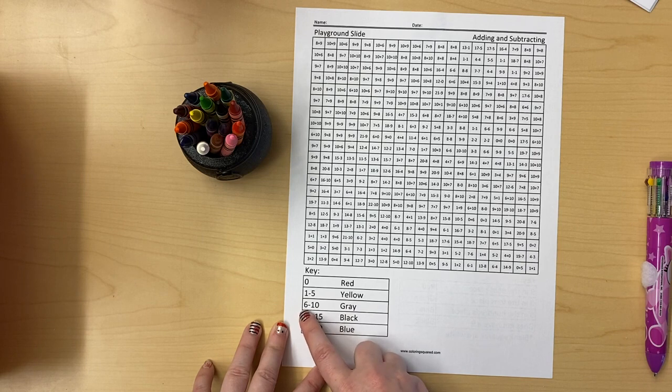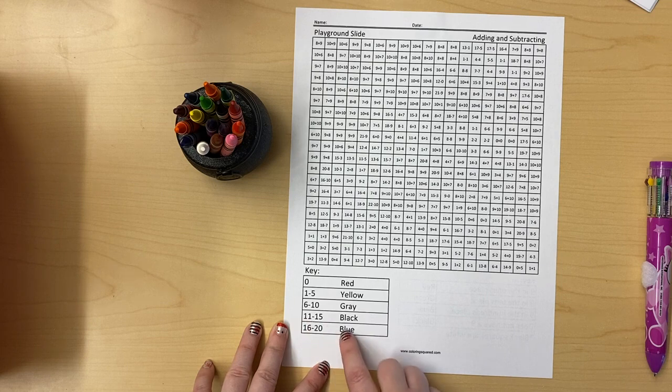6 through 10, that's 6, 7, 8, 9, 10, is gonna be gray. 11 through 15, that's 11, 12, 13, 14, 15, is gonna be black.